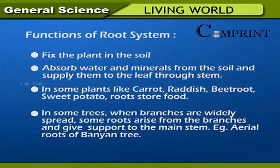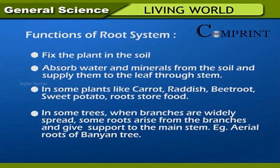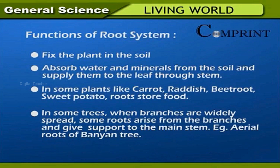Functions of root system: Fix the plant in the soil. Absorb water and minerals from the soil and supply them to the leaf through the stem. In some plants like carrot, radish, beetroot, and sweet potato, roots store food.